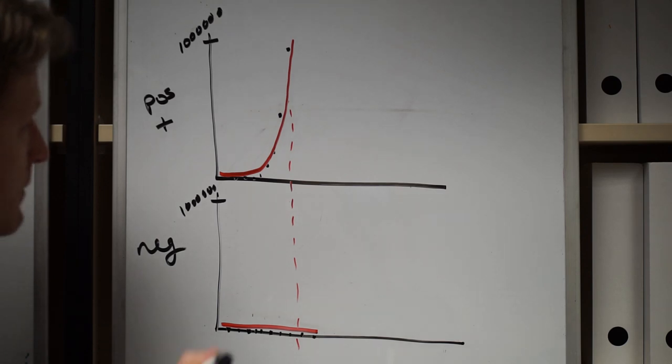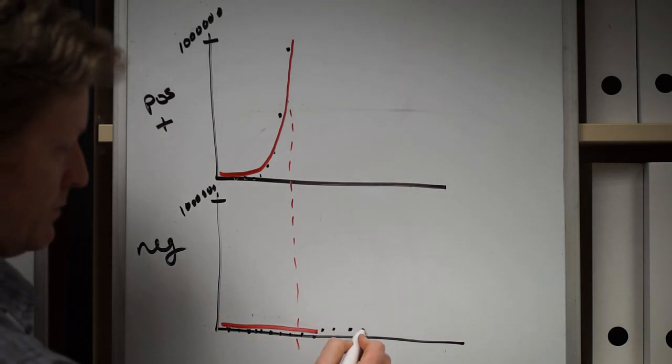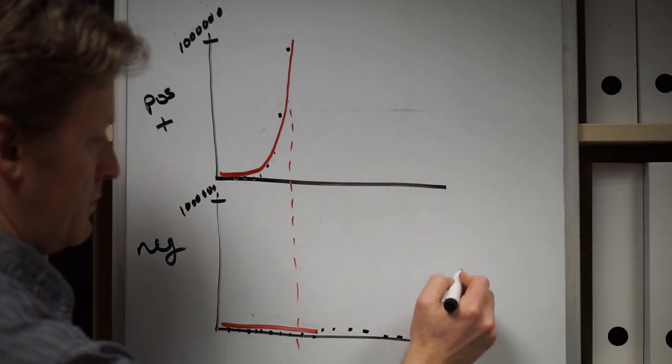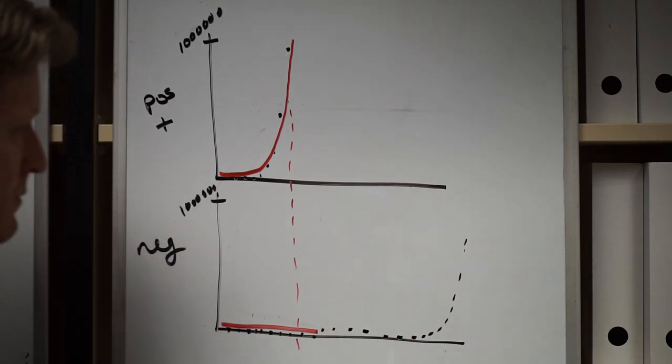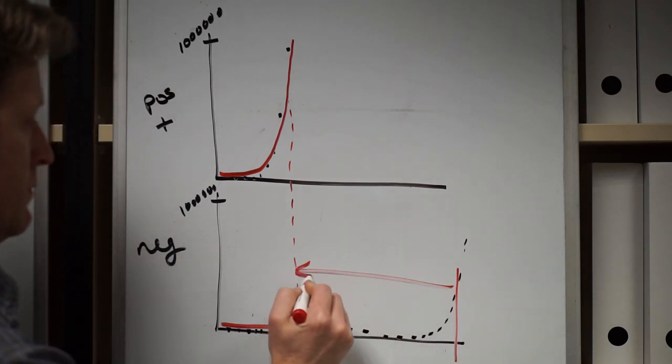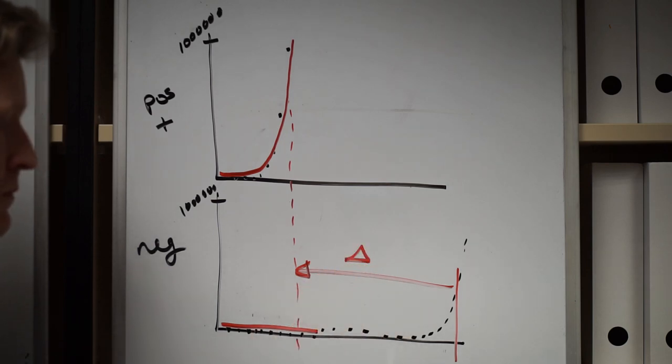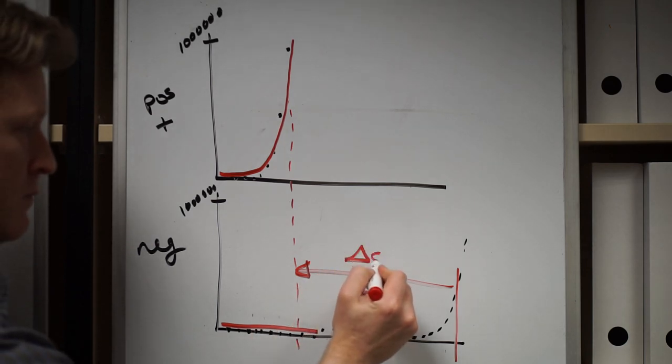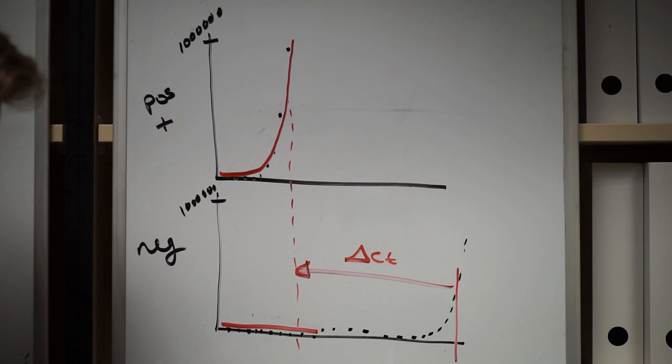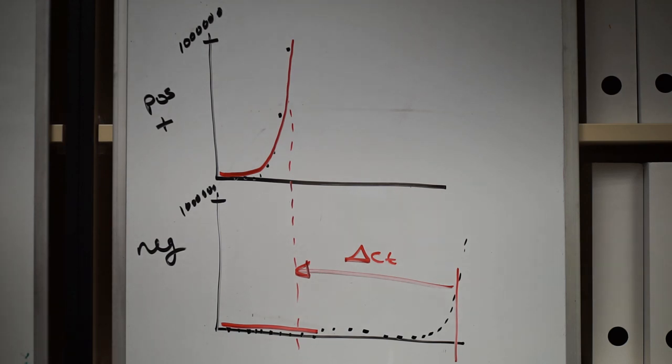Now, in the negative case, eventually, this system will produce something that amplifies, and so you do get a signal at, say, 40 cycles. But the delta, the difference between the 40 in the negative case and the 10 in the positive case, is going to be bigger the more DNA you started with. So for that reason, we can call this quantitative PCR.